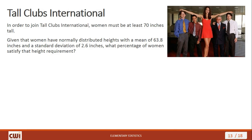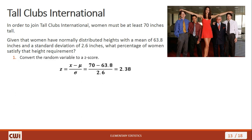Let's look at a real-world example. There's an organization called Tall Clubs International, originally organized for very tall women, requiring a woman to be at least 70 inches tall. If heights of women are normally distributed with a mean of 63.8 inches and a standard deviation of 2.6 inches, what percentage of women can satisfy the height requirement? First, we convert the random variable to a z-score: 70 minus 63.8, divided by 2.6, gives us 2.38.